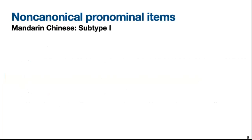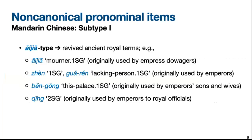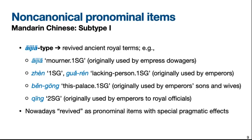Chinese also has a very similar subgroup — the āi jiā type — featuring ancient royal terms that have also been revived in modern usage for specific pragmatic effects. For example, we have āi jiā as a first-person pronominal item, originally used by Empress Dowagers; or zhèn or guǎ rén, originally used by emperors. We also have péng gōng or qīng, where qīng as a second-person singular pronominal item was originally used by Empress Dowagers to address royal officials. These items are very popular online, similar to what we saw for Vietnamese, and they are now being used for special pragmatic effects.